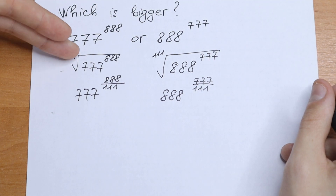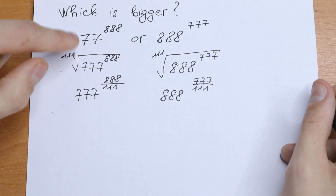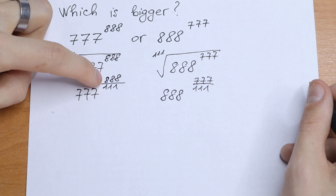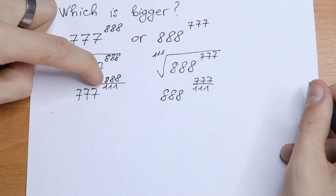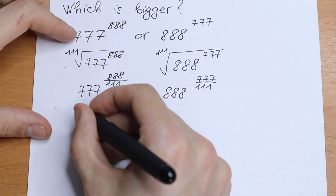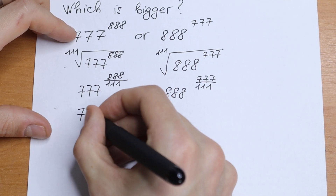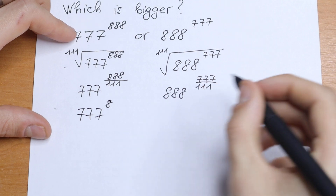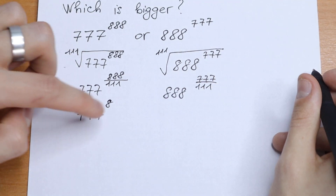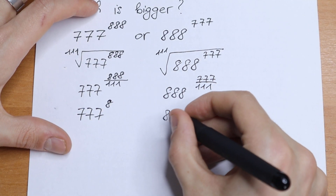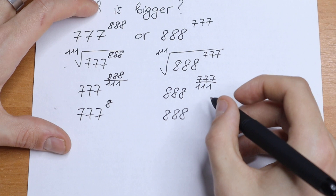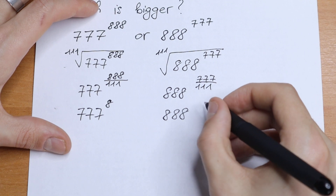Just the same steps written another way. We can divide: 888 divided by 111 gives 8, and 777 divided by 111 gives 7. So we will have 777 to the power 8 on the left, and 888 to the power 7 on the right.